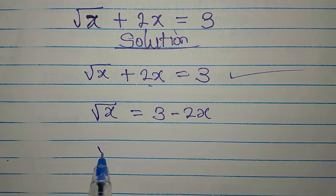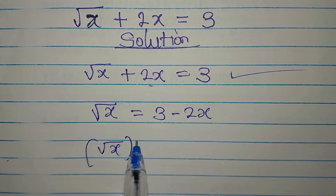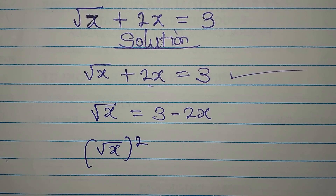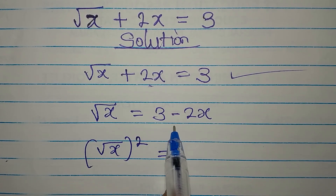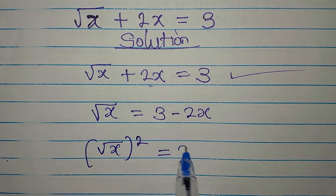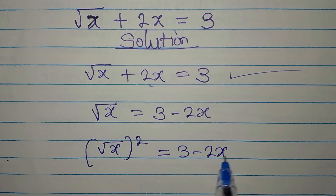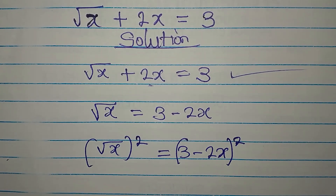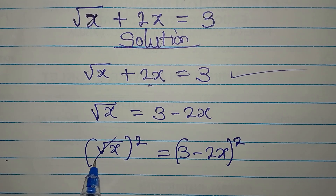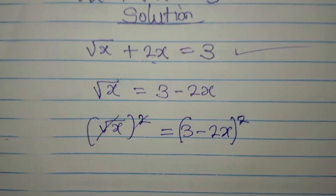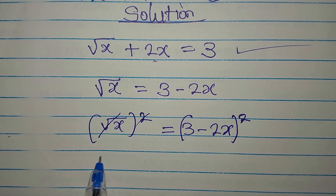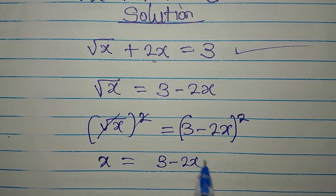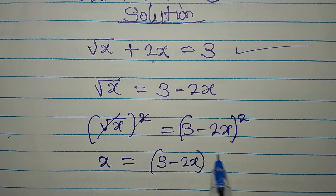Now the second step is to square both sides of the equation. Then here, we are going to have x equals 3 minus 2x, and this will be squared. Remember, the square and the square root cancel. Now x is alone and it equals 3 minus 2x, in two places.